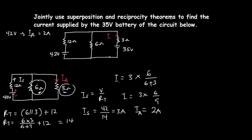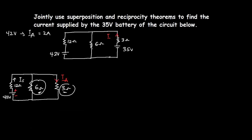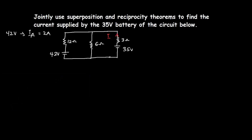Now we have to solve for the current IB when the 35-volt source is acting alone. At this point we are going to apply the reciprocity theorem. Let's redraw the first circuit that we solved for.